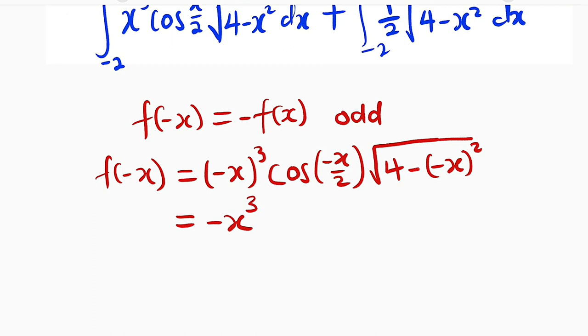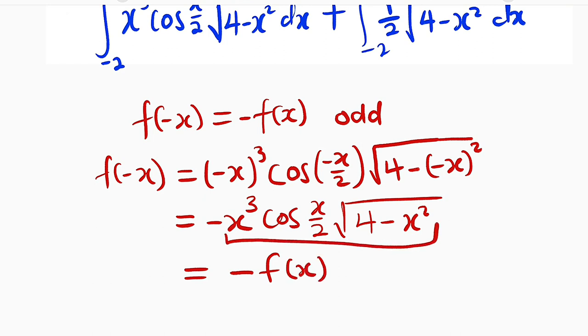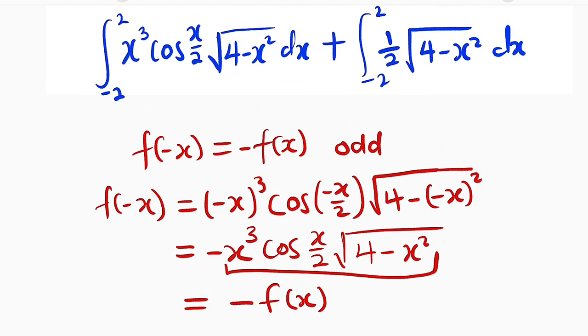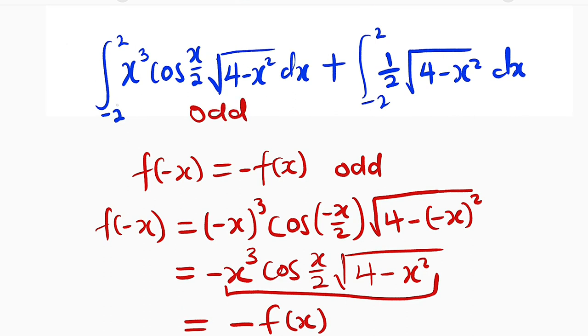Cosine function is an even function. Therefore cosine of negative x divided by 2 remains cosine of x divided by 2. Then multiply by the square root of 4 minus x squared. Can you see that this function is exactly equal to negative the original function? Therefore this function is an odd function and if it is an odd function under a symmetrical interval it is equal to zero.